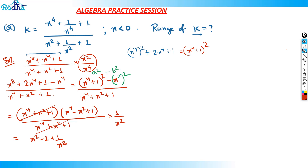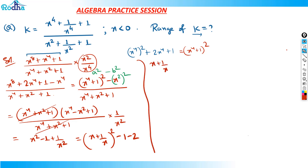Now we need to find the range of k, so let's try to get this in the form of (x + 1/x). We can write x² + 1/x² as (x + 1/x)² − 2, so the expression becomes (x + 1/x)² − 1 − 2, which equals (x + 1/x)² − 3. So the whole expression simplifies to (x + 1/x)² − 3.